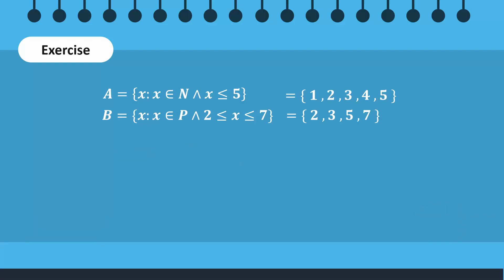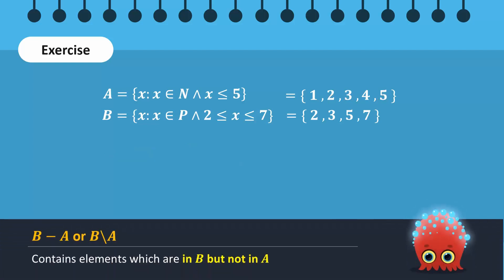B difference A includes elements which are contained in set B but not in set A. It will contain a single element, which is 7. Recall that this is called a singleton set.